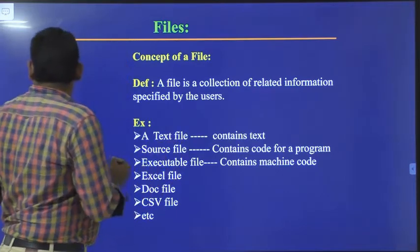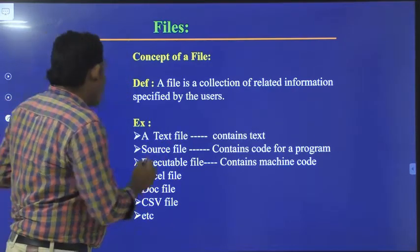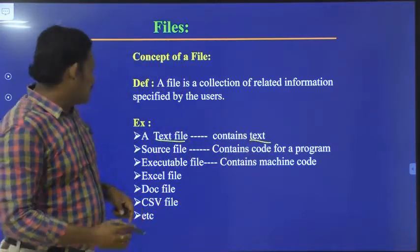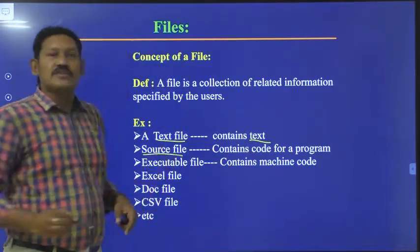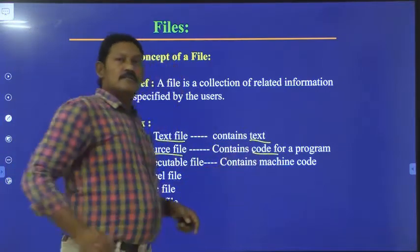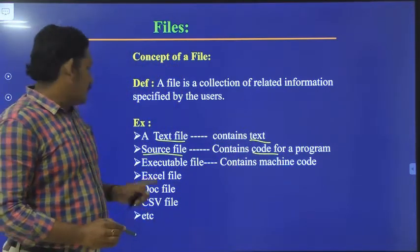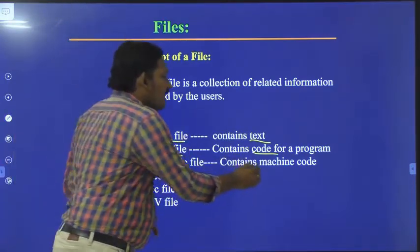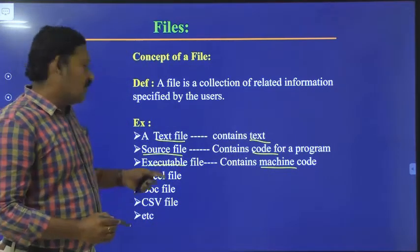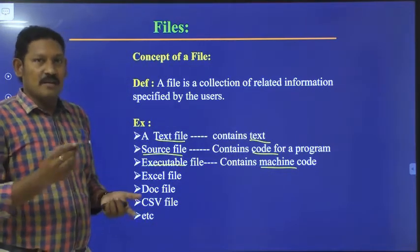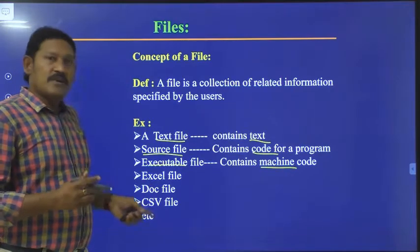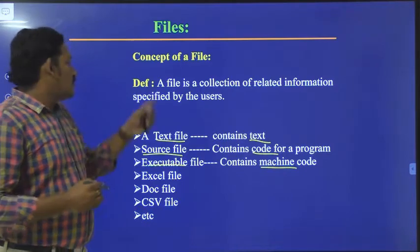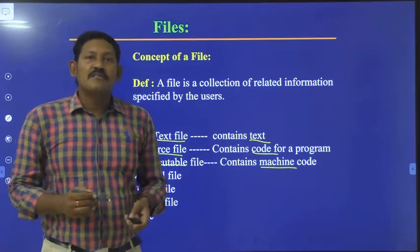So what does a text file consist of? A text file consists of text. Similarly, a source file consists of code. An executable file contains executable code, also called machine code or binary code. An Excel file consists of spreadsheet data, a document file consists of a document, and CSV contains comma separated values. So like that we have different varieties of files.